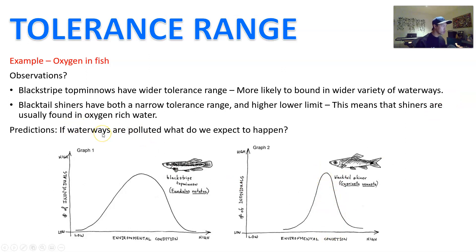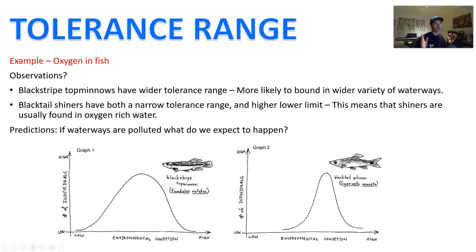Here is a prediction you can have a try: if the waterways are polluted, what would you expect to happen to these two particular populations of fish? Which one is going to survive, which one is not going to survive, and which will outcompete the other? You can go ahead and have a think about that.